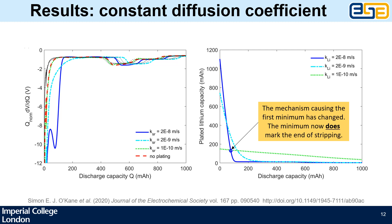To test if this was true, we abandoned the concentration-dependent diffusion coefficient and just used a constant one like Lun et al did. You still see the minimum, but when you do the plating lithium capacity versus discharge capacity on the right, the physics has changed — the minimum now does mark the end of stripping.